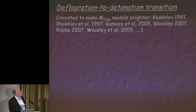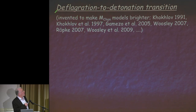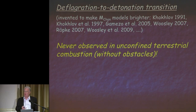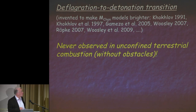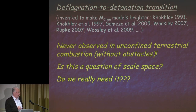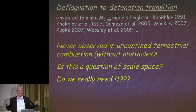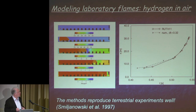The deflagration-to-detonation transition is another issue. This was invented to make Chandrasekhar mass explosions brighter—I'll show you in a minute why pure deflagrations can't work. One needs some additional ingredient to make normal Type Ia's, and therefore people invented this. The problem is that this was never observed in terrestrial combustion experiments without obstacles. If you have obstacles on the way, such a transition can happen; in free combustion, it was never observed. The question is whether this is a problem of scale. And also: do we really need it? I will argue not necessarily.